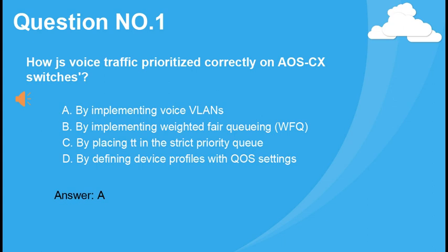How is voice traffic prioritized correctly on AOS-CX switches? A. By implementing Voice VLANs. B. By implementing Weighted Fair Queuing (WFQ). C. By placing it in the Strict Priority Queue. D. By defining device profiles with QoS settings. Answer: A.